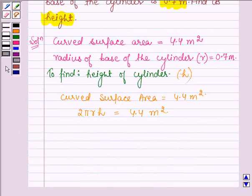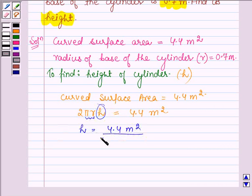Now let us substitute the values of r and π to get h. So h = 4.4 m² ÷ (2 × π × r), where π is 22/7 as given, and r is 0.7 m.